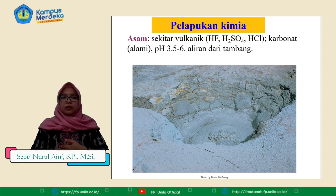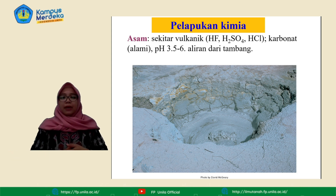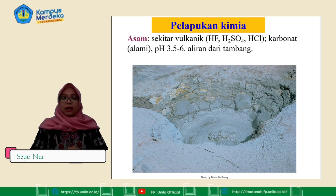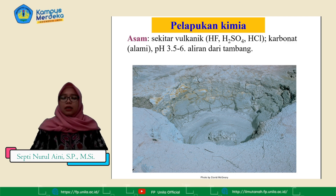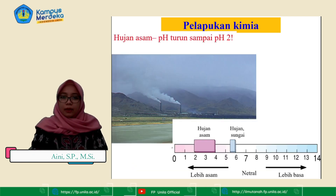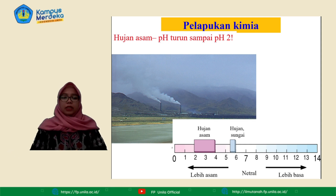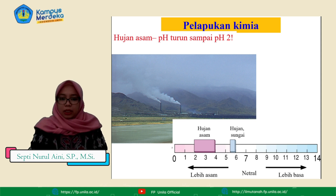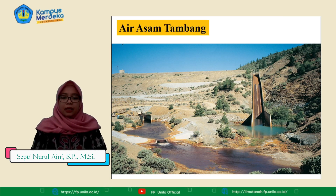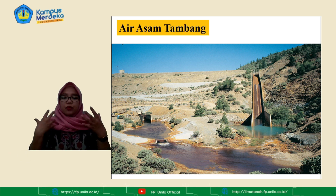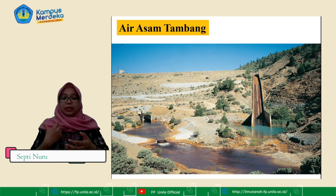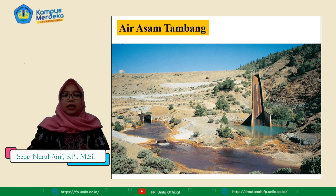Pada suasana asam di sekitar vulkanik yang mengandung HF, H₂SO₄, dan HCl, karbonat alami pH-nya berkisar 3,5 sampai 6. Kalau terjadi hujan asam, biasanya pH-nya turun sampai pada pH 2. Berikut adalah gambar air asam tambang di mana air asam tambang ini merupakan air yang bersifat asam atau air dengan kemasaman yang tinggi yang dihasilkan dari kegiatan pertambangan.